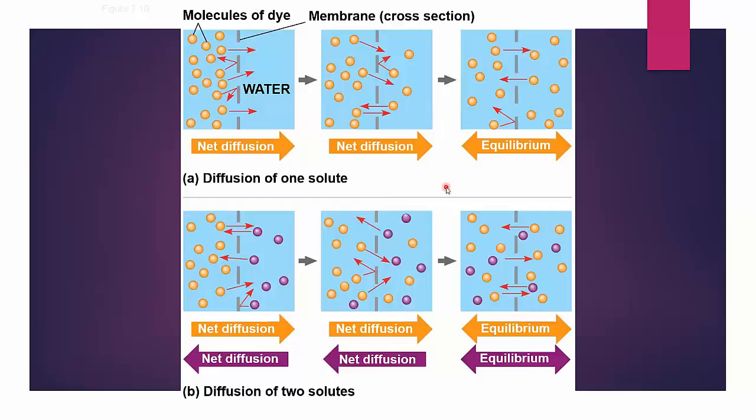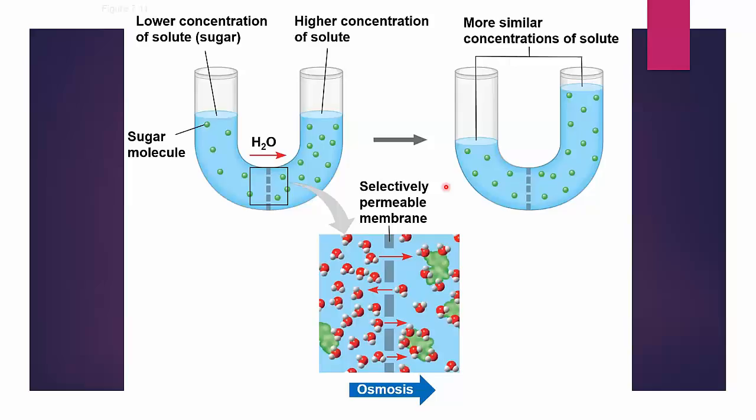Osmosis works on a similar principle, except we're talking about the movement of water across the membrane rather than dissolved substances. So in this u-shaped tube, we have water, equal amounts of water, and we have dissolved substances.